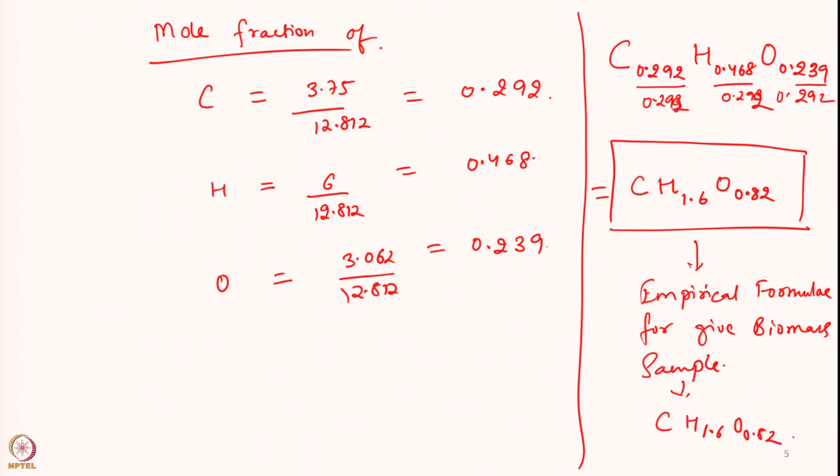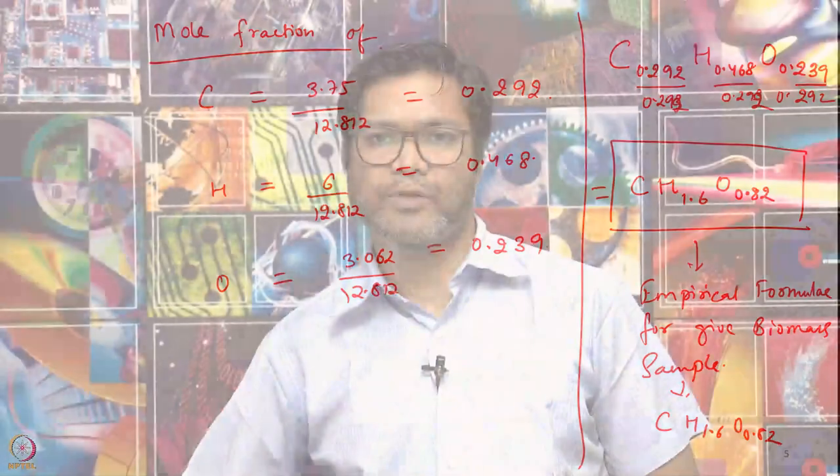This looks quite different from the mass fraction because of the different molecular masses of carbon, hydrogen, and oxygen. Similarly when we include nitrogen, sulfur, phosphorus, and other elements present in biomass, a similar exercise can give us their contributions. This concludes the solution for our first tutorial problem.